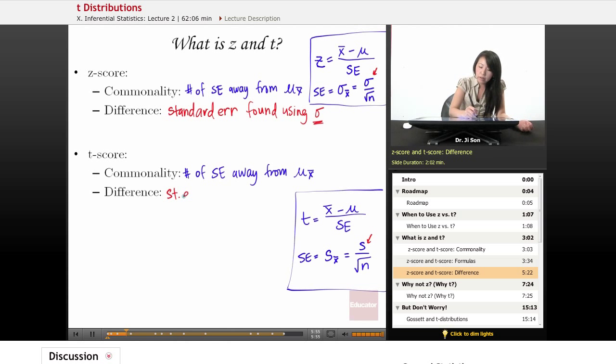Then, the standard error found using estimated population standard deviation. And that is s. And s is really estimated from the sample. And if we double-clicked on s, it would look like this.